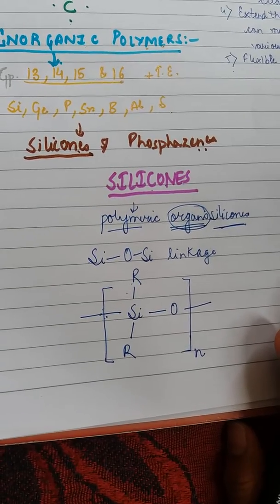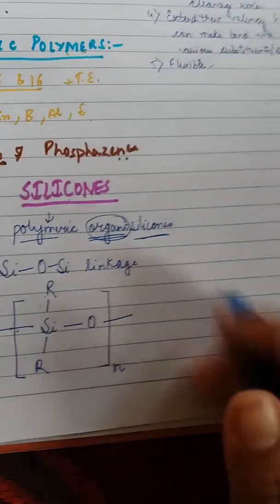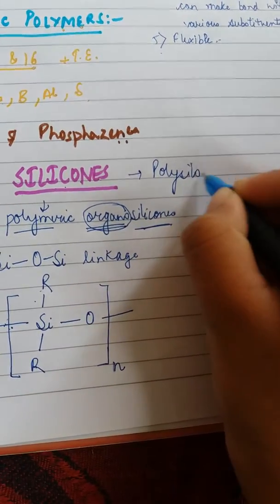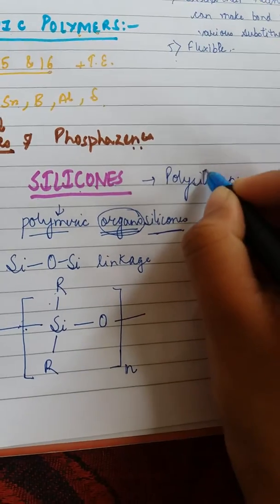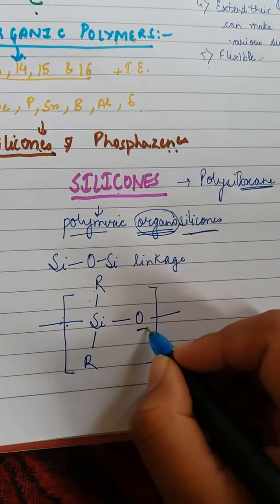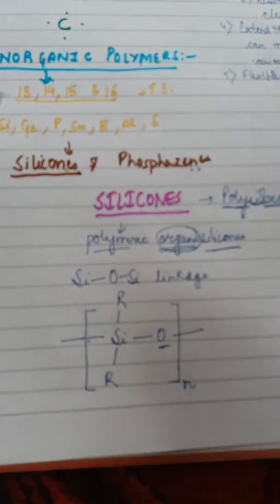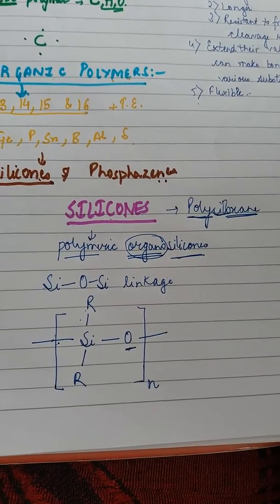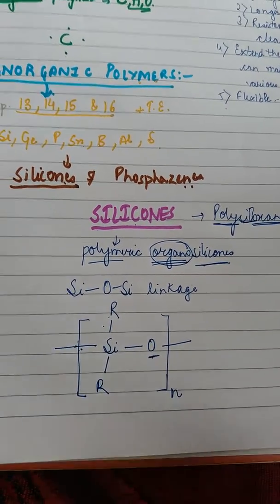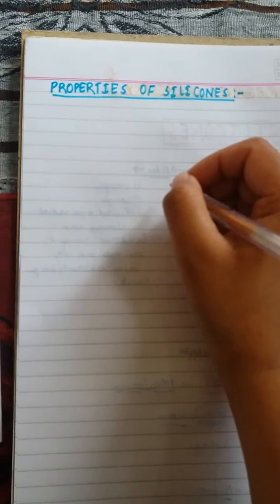These are called polysiloxanes — another name for silicones. The name polysiloxane reflects that it contains oxygen atoms and silicon in a long chain of repeating subunits, which is why they are known as polysiloxanes.